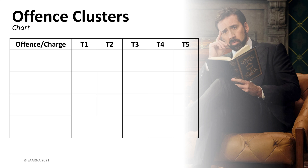Each row is a separate charge or conviction. Usually that's the same thing as the offense, but sometimes one offending event may have several charges and convictions associated with it. If so, I like to separate them into separate rows to make sure I am not making any errors in terms of the offense timeline.